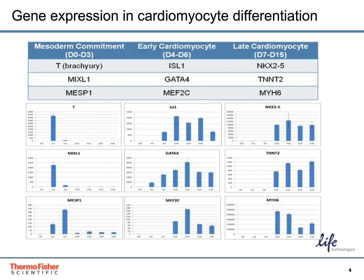Here we show the expression of expected markers over time, which turn on and off through differentiation as expected — during early mesodermal commitment (day zero to three), early cardiomyocyte development (day four to six), and late cardiomyocyte development (day seven to fifteen). This data is shown as TaqMan qPCR analysis of differentiated H9 ESCs from time of induction through day 30, with bars representing relative gene expression for each time point, normalized to day zero.